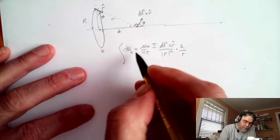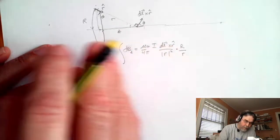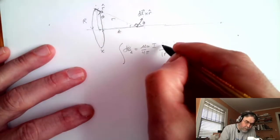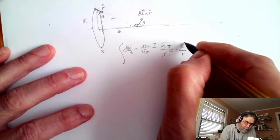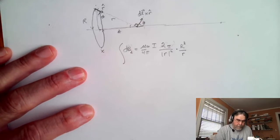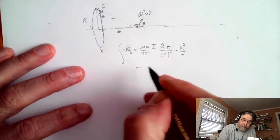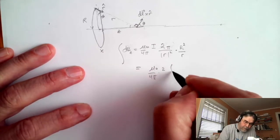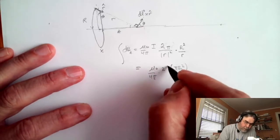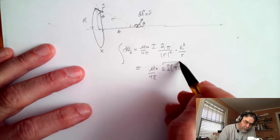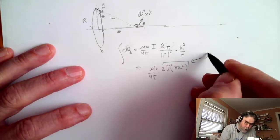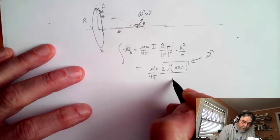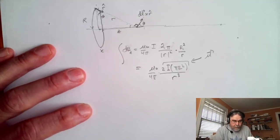So when I integrate, all I have to do is replace the integral — I've already taken care of the direction. This just becomes 2πR, but that makes the product 2πR times R, which is R squared. So this becomes mu_0 over 4π times 2π R squared times the current — that's the area of the loop. You'll notice this is nothing other than the dipole moment mu of that loop, divided by little r cubed. And that turns out to be an exact result.